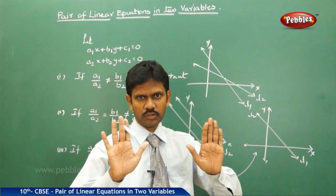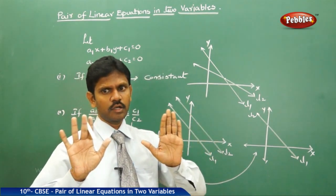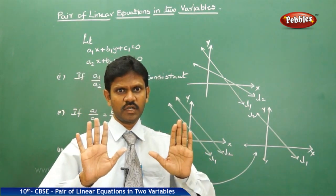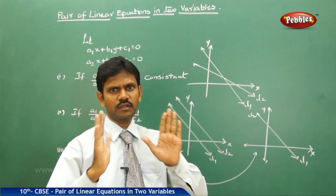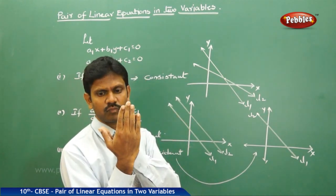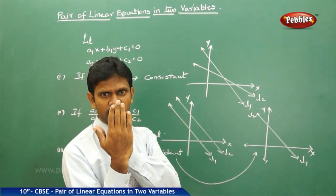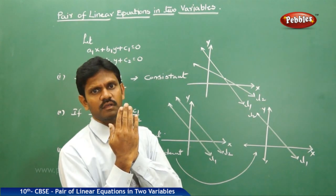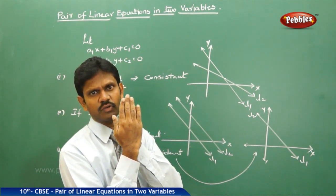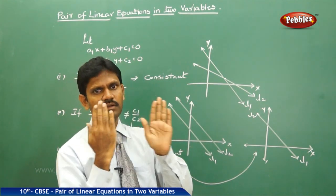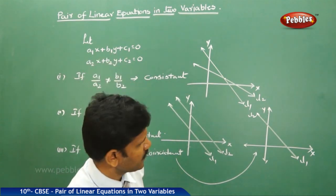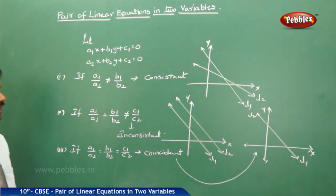We can see this with two hands as two different models. If you join them to each other, one overlaps with the other, and from the front side it appears as only one. Similarly, we can understand these three different cases.